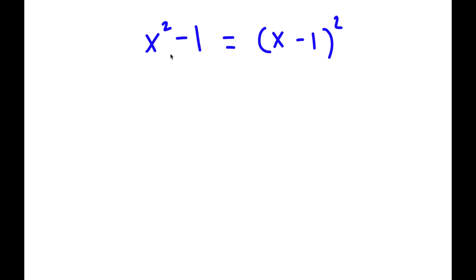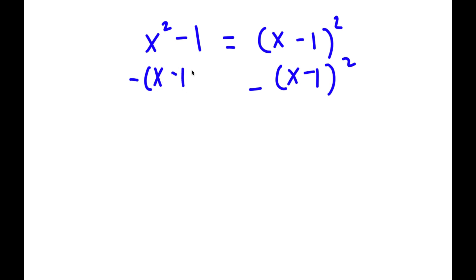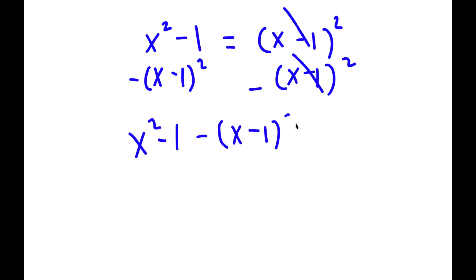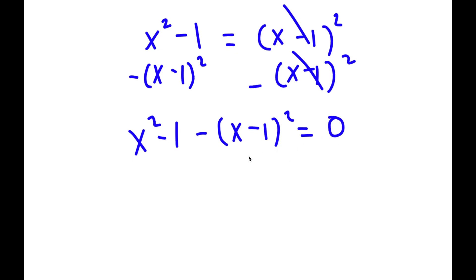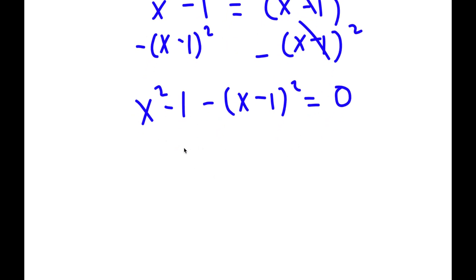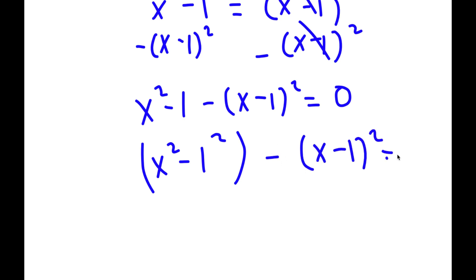So in this problem, I have x squared minus 1 is equal to x minus 1 squared. To solve this, I'm going to first subtract x minus 1 squared on both sides. So I get x squared minus 1 minus x minus 1 squared is equal to 0. Now x squared minus 1 I can rewrite as x squared minus 1 squared, because 1 is the same thing as 1 squared.